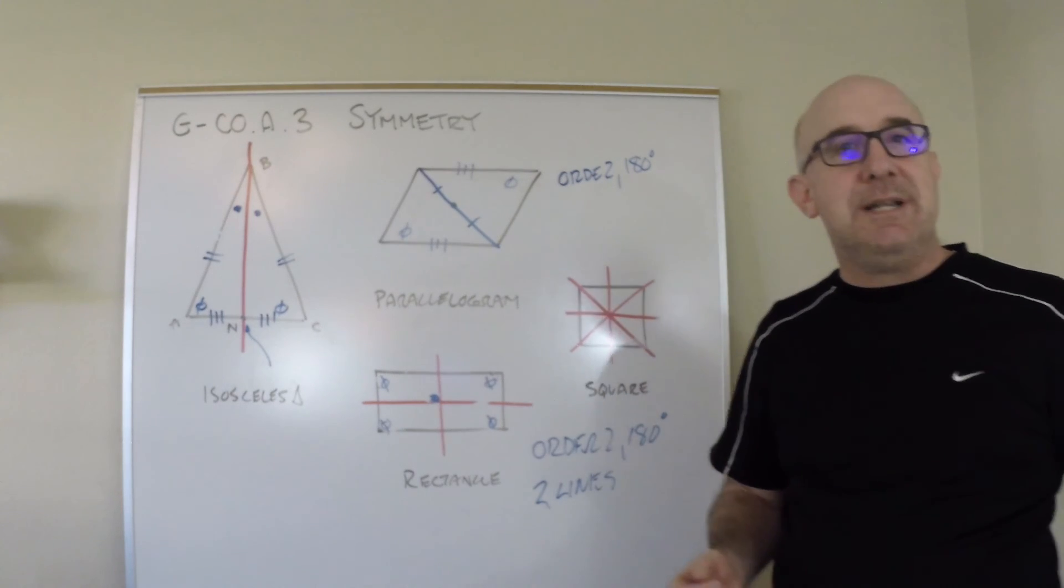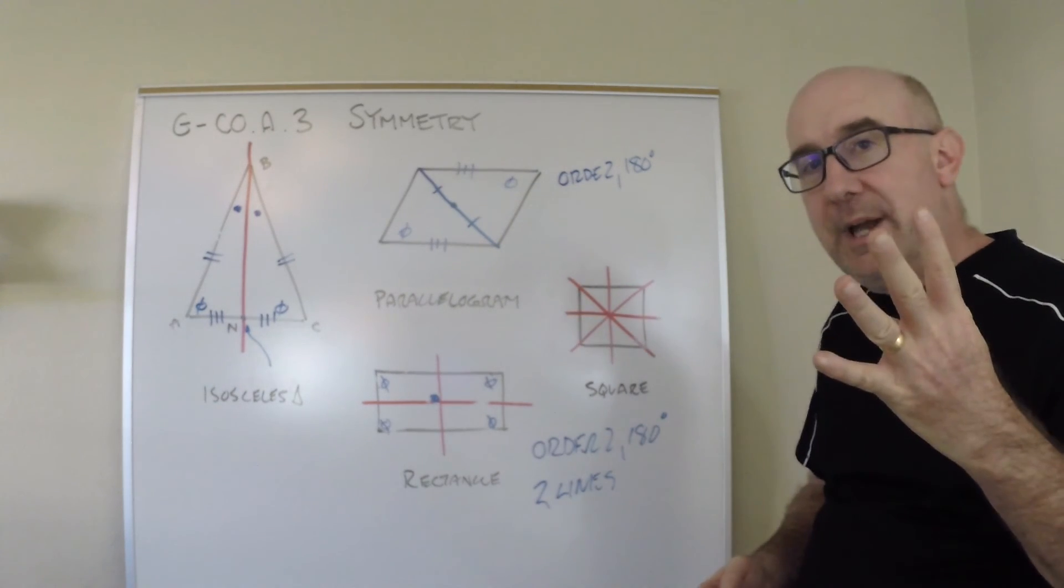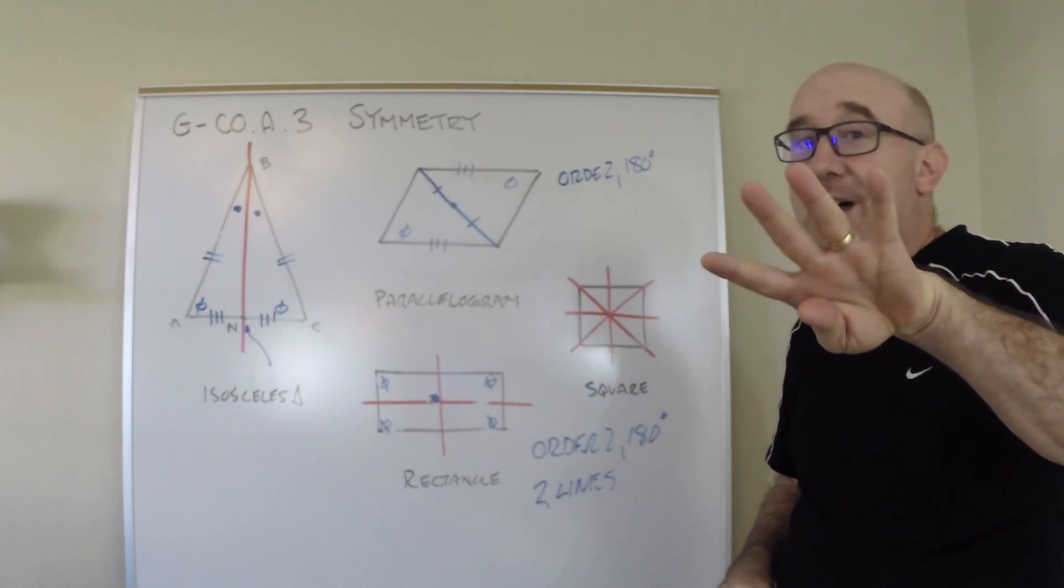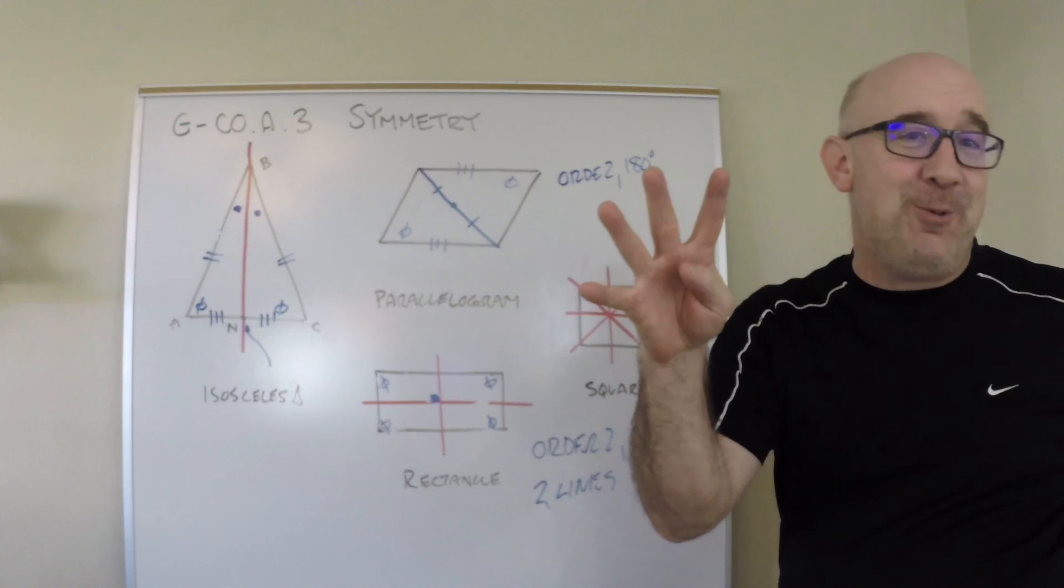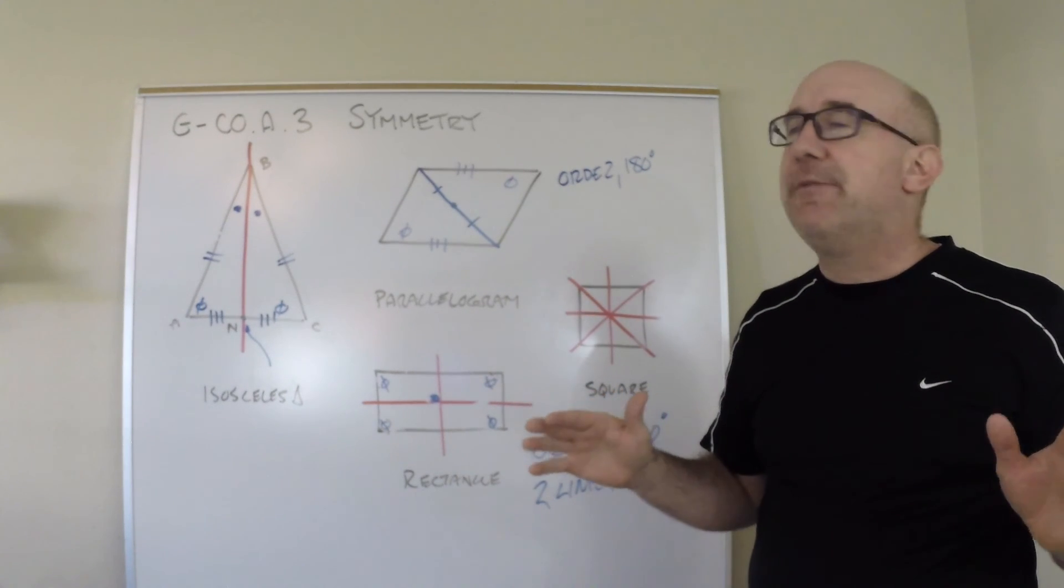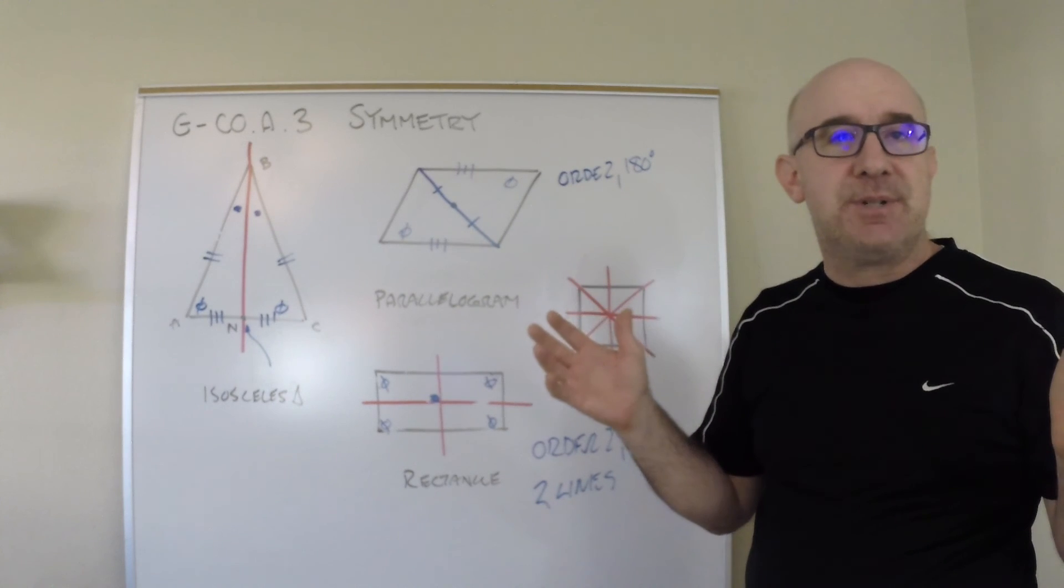It has four equal angles, four equal sides, and so it has four lines of symmetry and four rotational order. All things are equal, so of course you get the maximum symmetries.